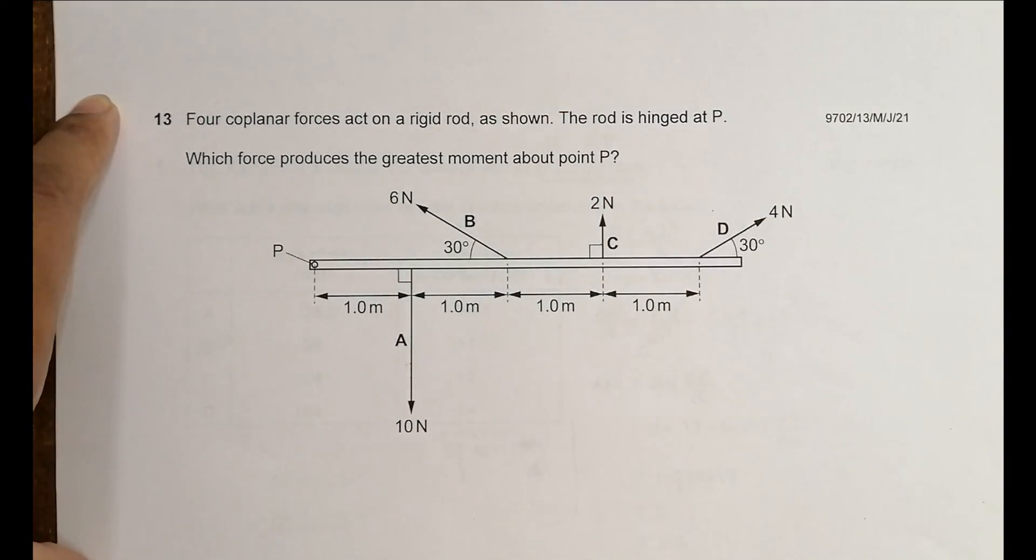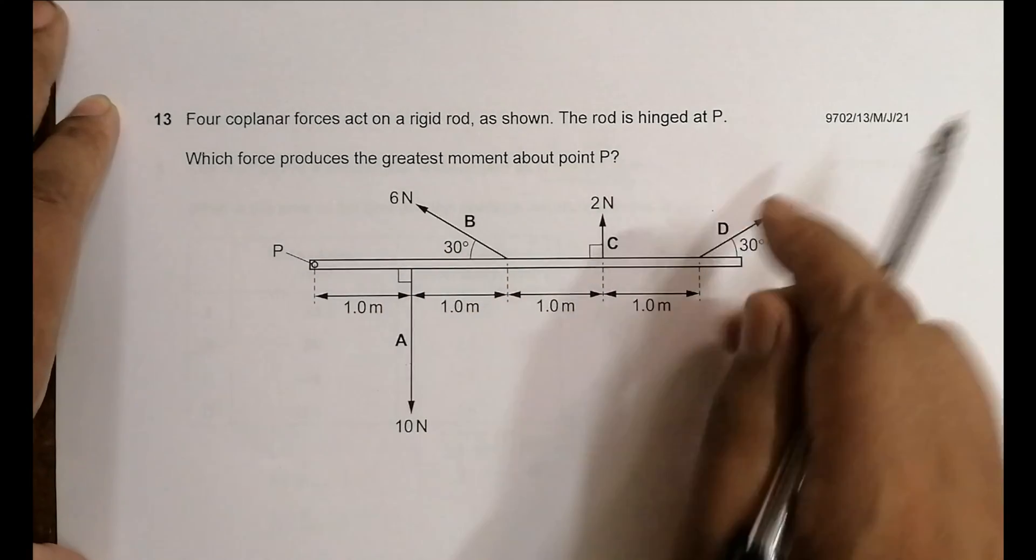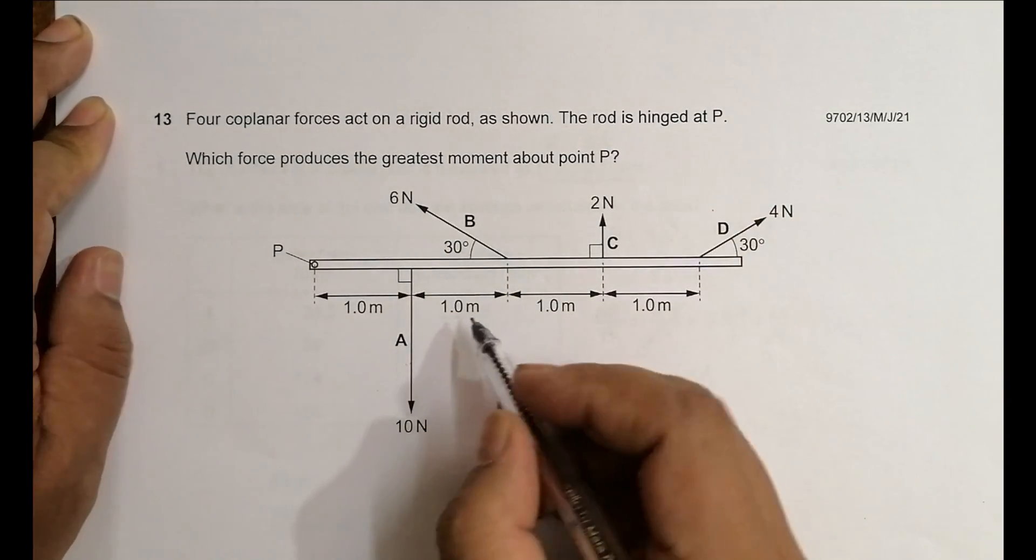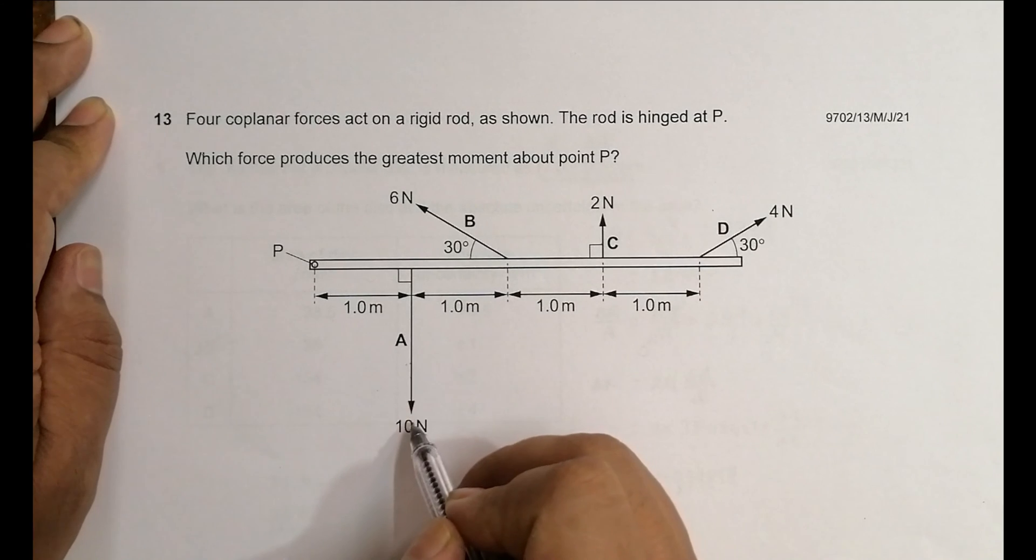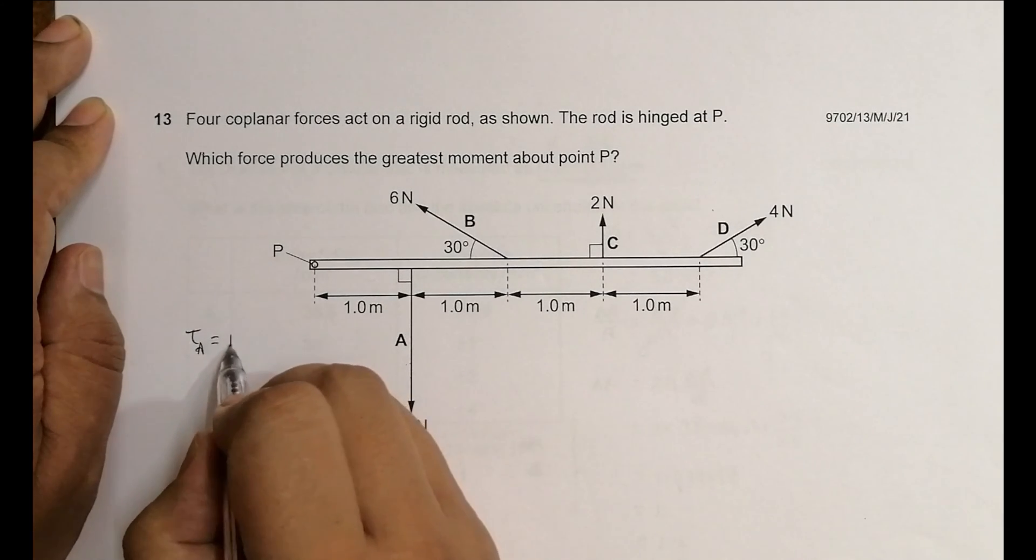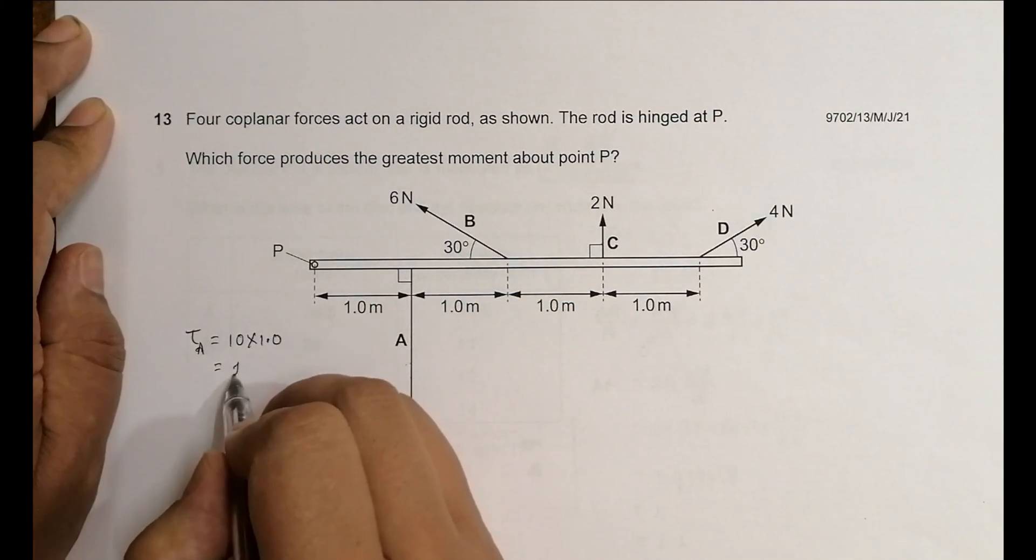So we have to calculate the moment. Let's go for choice A: 10, 1.0. Tau due to A should equal 10 into 1.0. And here we have sine 90. Sine 90 is 1, perpendicular. So this is 1 newton meter - sorry, this is 10, actually it is 10 newton meter. I made a mistake.